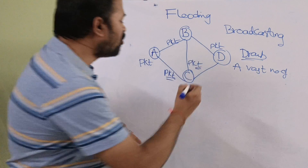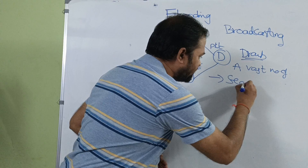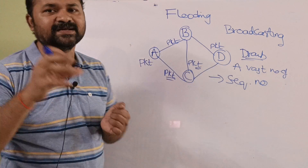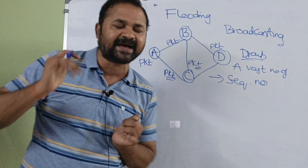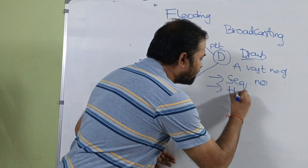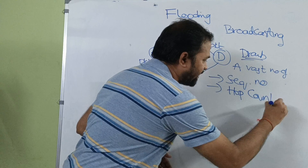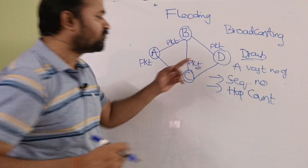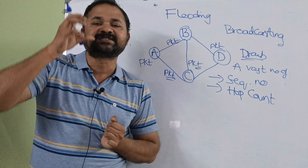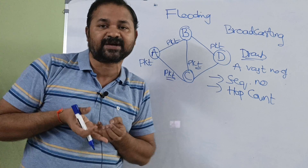We can overcome this problem using two approaches. The first approach is by maintaining a sequence number in each packet. The second approach is by maintaining a hop count in each packet.